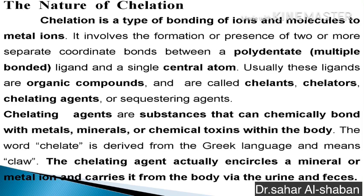Chelation is a type of bonding of ions and molecules through metal ions. It involves the formation or presence of two or more separate coordinate bonds between a polydentate, multiple-bonded ligand and a single central atom. Usually these ligands or organic compounds are called chelants. Chelating agents are substances that can chemically bond with metals, minerals, or chemical toxins within the body.